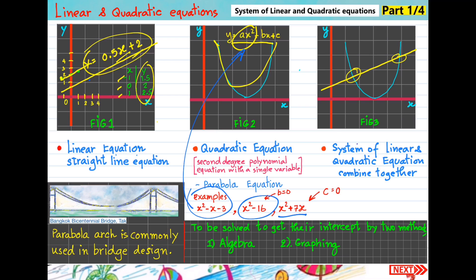For figure 3, it combines between straight line and curved line. This one we are going to discuss in this chapter. We call it system of linear and quadratic equation. We are going to find their solution. To solve or to find the solution or intercept, we have two methods: first one algebra method, and the second one graphing method.